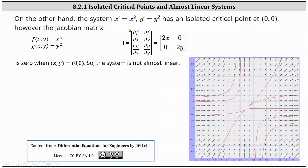On the other hand, the system given by x prime equals x squared and y prime equals y squared, with the phase portrait graphed below, has an isolated critical point at zero comma zero. If we zoomed in around this point, we would not find any additional critical points, which is why it is isolated. However, the Jacobian matrix for the given system has entries two x, zero, zero, two y. Notice the Jacobian matrix would be the zero matrix at zero comma zero, which is not invertible, and therefore the system is not almost linear at the critical point.